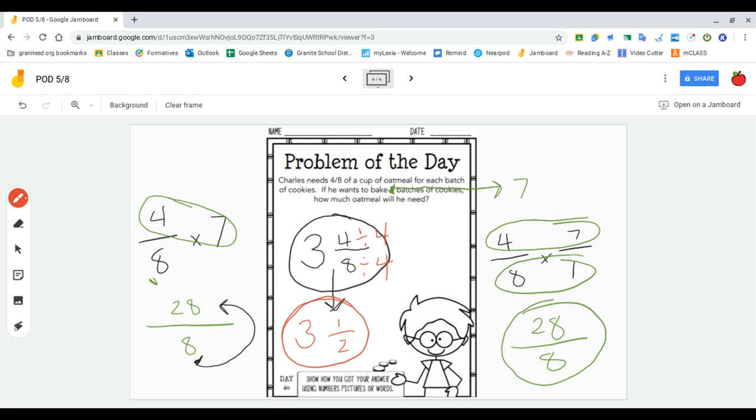So three and one half is the most correct answer for this problem because I have simplified it all the way down to its most simple form. Okay, you guys have some different numbers. You need to make five batches of cookies. Good luck!